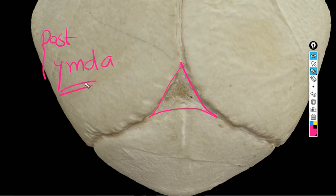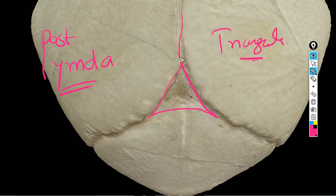This is posterior fontanelle, triangular in shape. As you can see, it is made by three sutures: one sagittal suture and two lambdoid sutures. This fontanelle fuses after three months of birth.